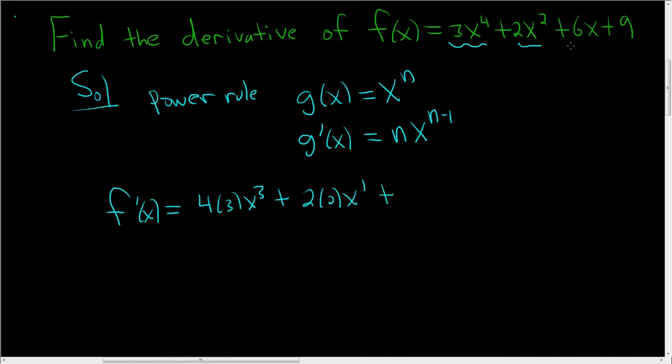The derivative of 6x, well that's just 6. Keep in mind you can use this formula where n is 1, but it's better to look at 6x and say, 6x is a straight line with slope 6. The derivative is the slope, so it must be 6.